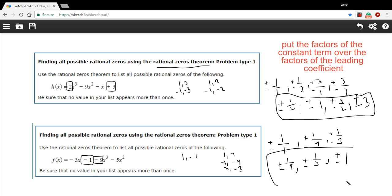So that is how to use the rational zeros theorem to come up with all the possible rational zeros of a function.